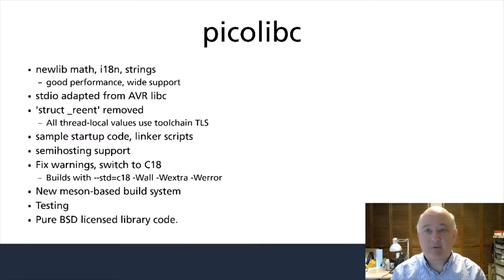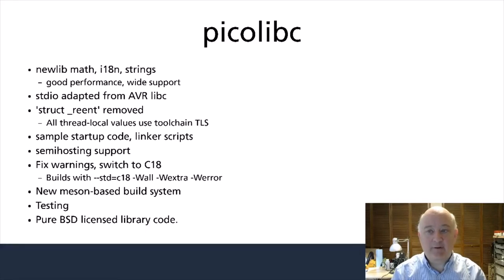Once I decided to abandon attempts to upstream my work, I felt free to make all the changes I wanted, building the library I thought best. The good parts of newlib I kept — the math, string, and locale implementations worked great. Having had experience with AVRLibc on Atmel processors, I took that code as the basis for a new standard I/O implementation. To get rid of struct reent, I decided to replace it with thread-local storage as supported by the C language — that involved changing nearly every file in the library. PicoLibC includes enough infrastructure to build and run applications on bare metal hardware, including startup code, linker scripts, and a mechanism to get error codes out of tests and up into the test framework running on a Linux host. Changes to move the code base to more modern practice were made so that PicoLibC now builds with a C18 compiler and builds cleanly with GCC and Clang's -Wextra flags.